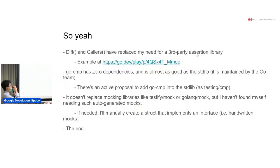So yeah, diff and callers have replaced my need for a third-party assertion library. That's just the Go playground. GoComp has zero dependencies, and it's almost as good as standard library. It's actually maintained by the Go team themselves, and there's an active proposal to add GoComp to the standard library as testing.cmp. Although currently I have to admit the API is actually quite complicated. There are some people who don't really like how complicated it is. They say it needs to be a bit simplified before it can be accepted into a standard library. It doesn't replace mocking libraries like TestifyMock or GolangMock, but I haven't really found myself needing to auto-generate mocks. If I need to have some kind of test double, I'll manually write a struct that implements the interface - handwritten mocks.